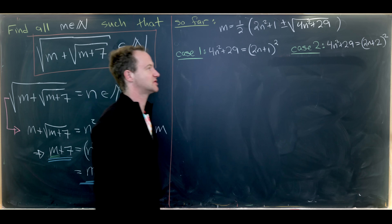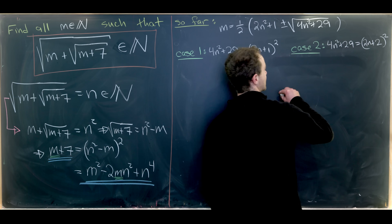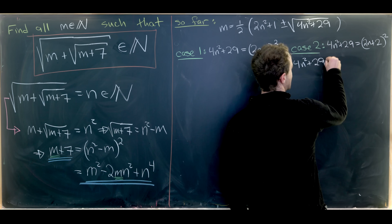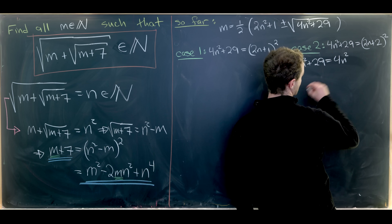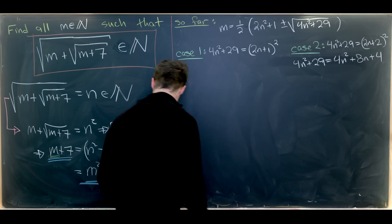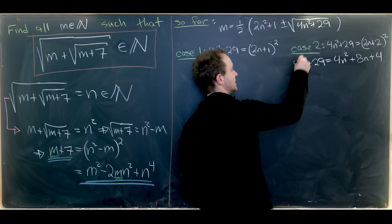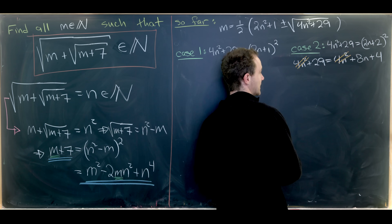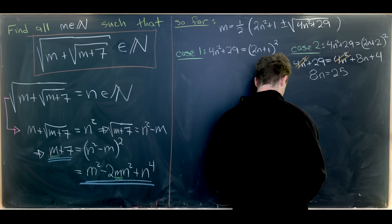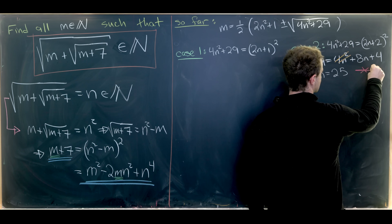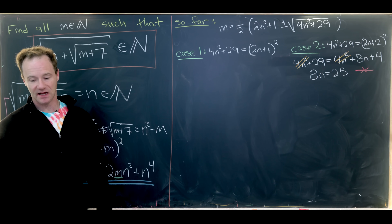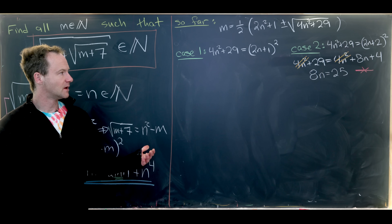Let's start with case two. If 4n squared plus 29 equals (2n plus 2)² and we expand the right-hand side, we get 4n squared plus 8n plus 4. The 4n squared terms cancel, leaving us with 8n equals 25. That does not give us a solution because n equals 25 over 8 is not a natural number, it's a rational number.